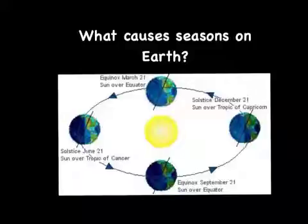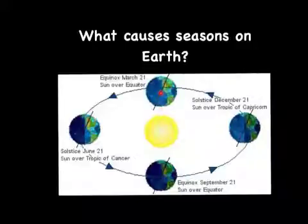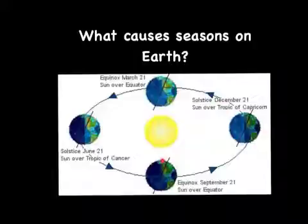Let's take a look at this diagram. On two days of the year — March the 21st and September the 21st — the sun is directly over the equator. These two days are called equinox, meaning equal day and night. We have 12 hours of daylight and 12 hours of darkness all around the Earth.